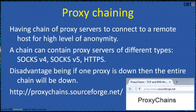Proxy chaining involves a chain of servers to connect to a remote host for a high level of anonymity. A chain can contain proxy servers of different types — SOCKS version 4, version 5, HTTPS, etc. If you use an HTTP proxy, it must be the last one in the chain. A disadvantage is that if one proxy is down, the entire chain goes down, and the time lag increases by the sum of all lags through the proxies. If a chain contains no proxies, the connection is made directly.